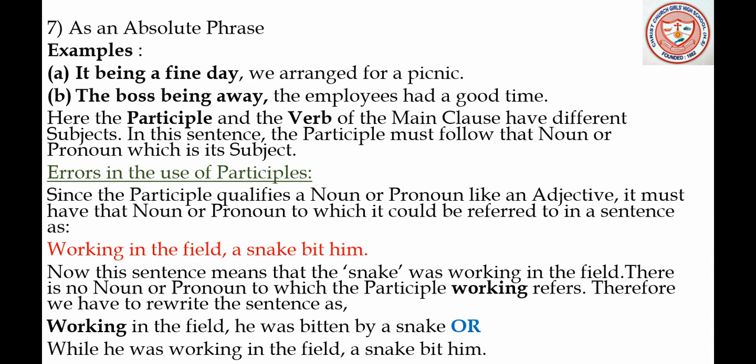There is no noun or pronoun to which the participle 'working' refers. Therefore we have to rewrite the sentence. You can rewrite it in two ways: first, 'Working in the field, he was bitten by a snake,' or second, 'While he was working in the field, a snake bit him.' You can rewrite the sentence in either of these ways to make it correct.